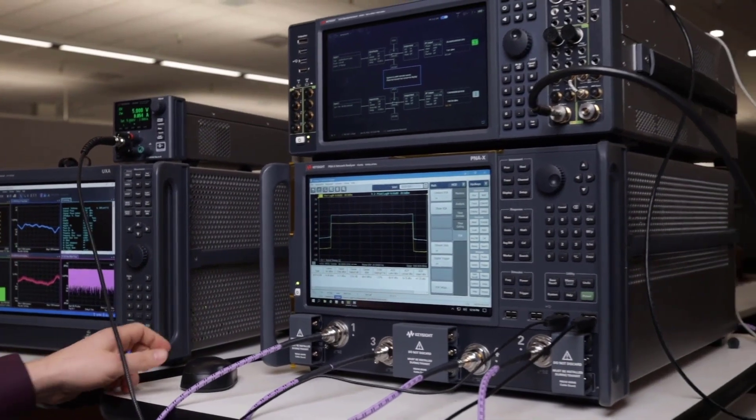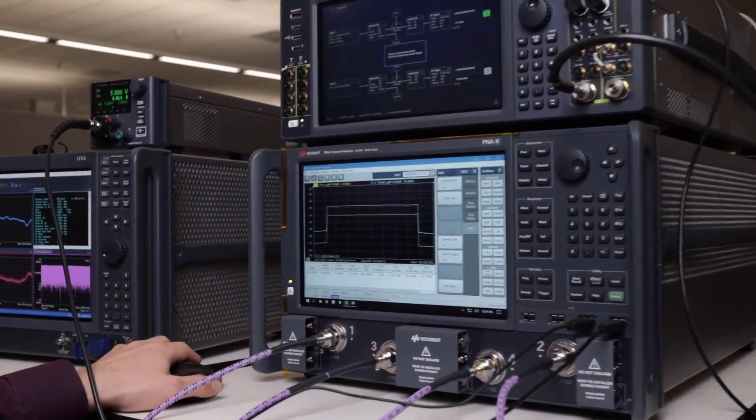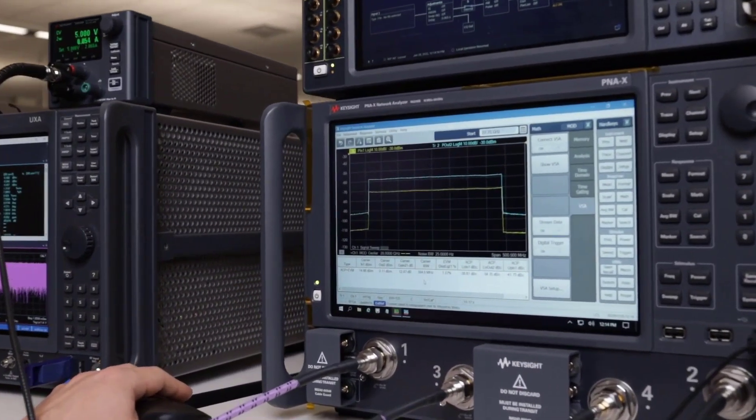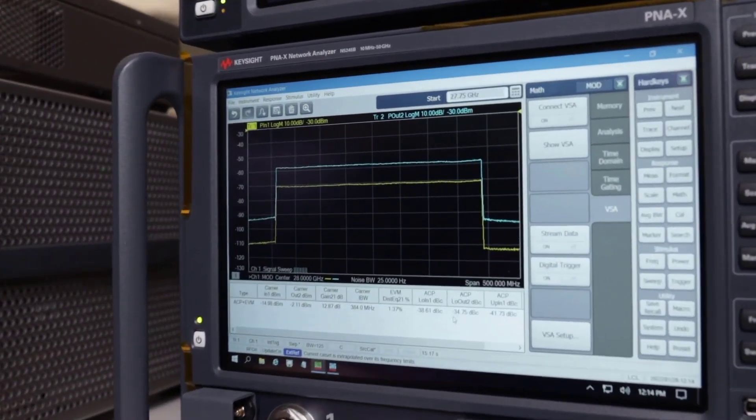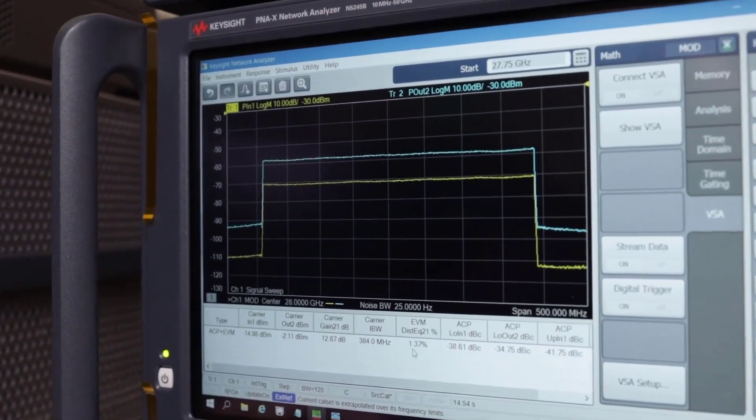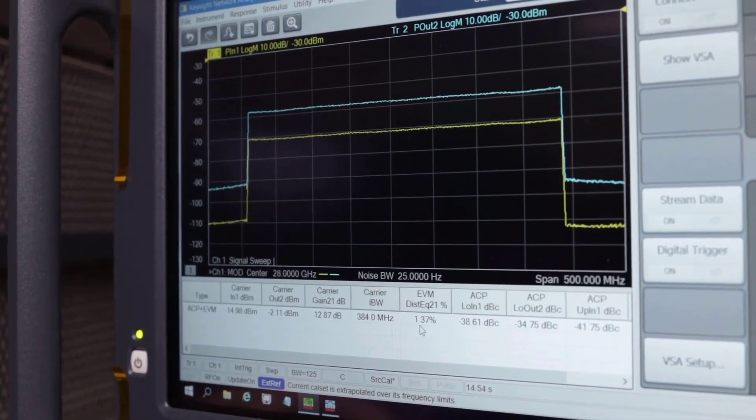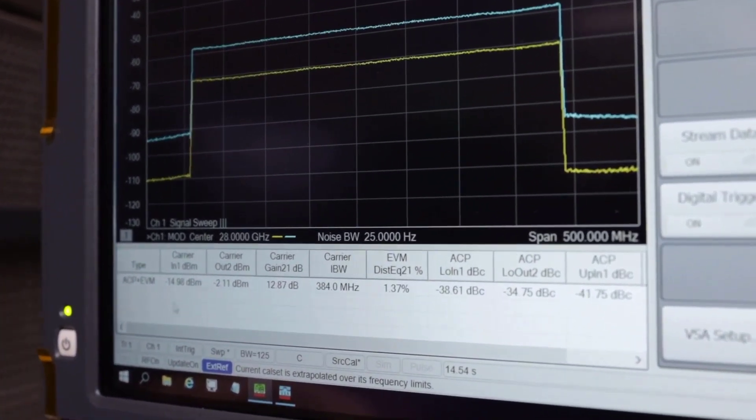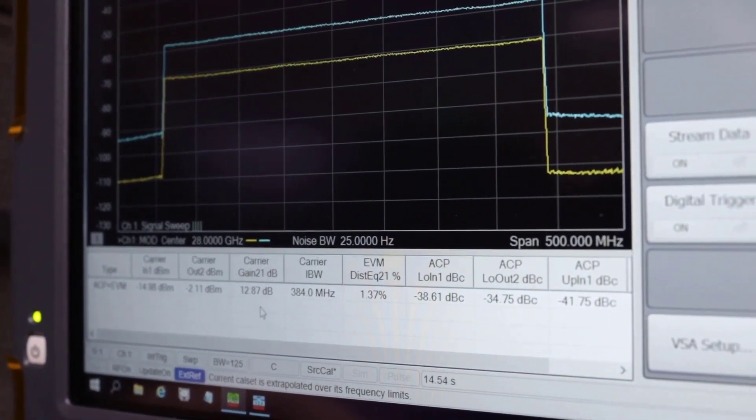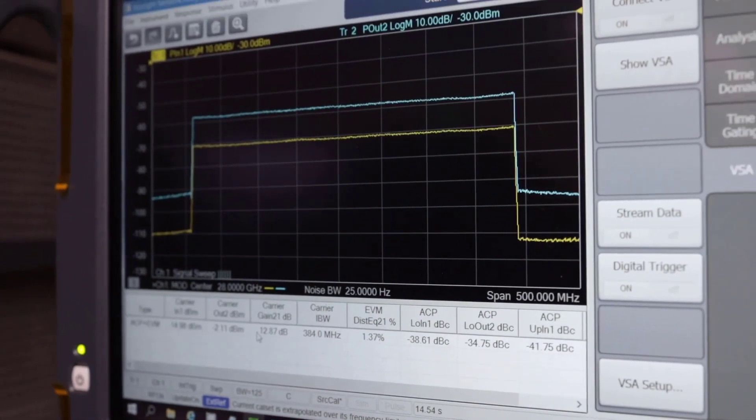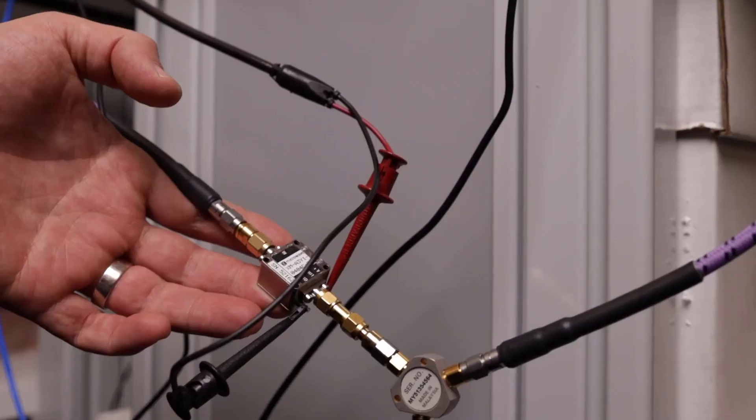So let's take a look at the modulation distortion application. As we can see, this is measuring our ACP, our distortion EVM, which is measuring at about 1.37%, and the input and output powers and our gain of our device. Our device here is a low noise amplifier, which works all the way up to 31 GHz.